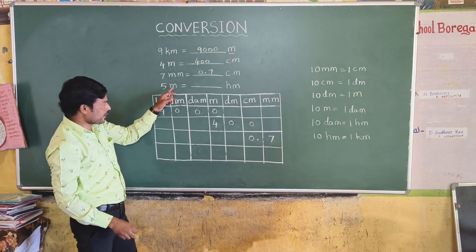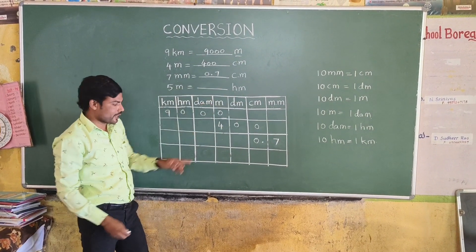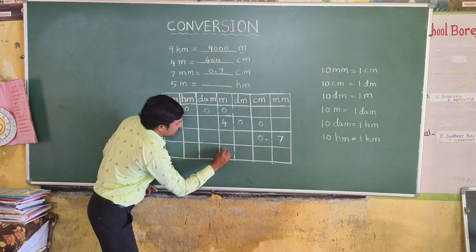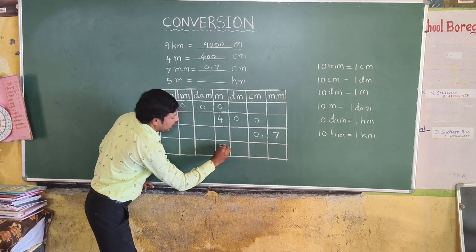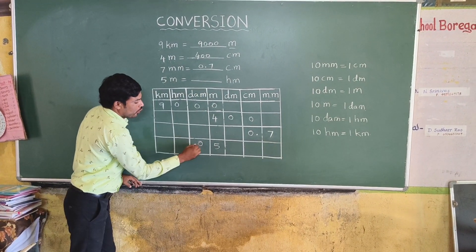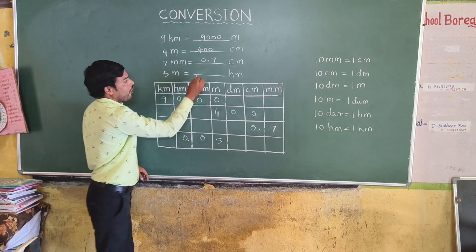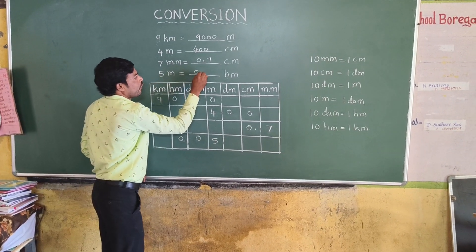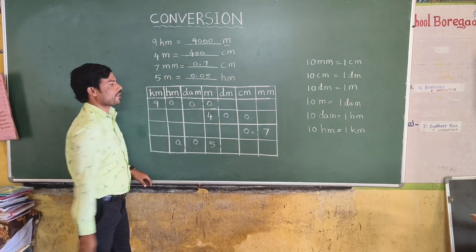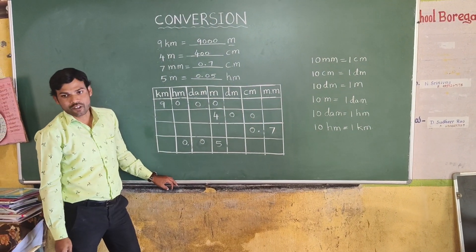5 meters is equal to how many hectometers? 5 meters, how many hectometers? 0.05 hectometers. This is conversion.